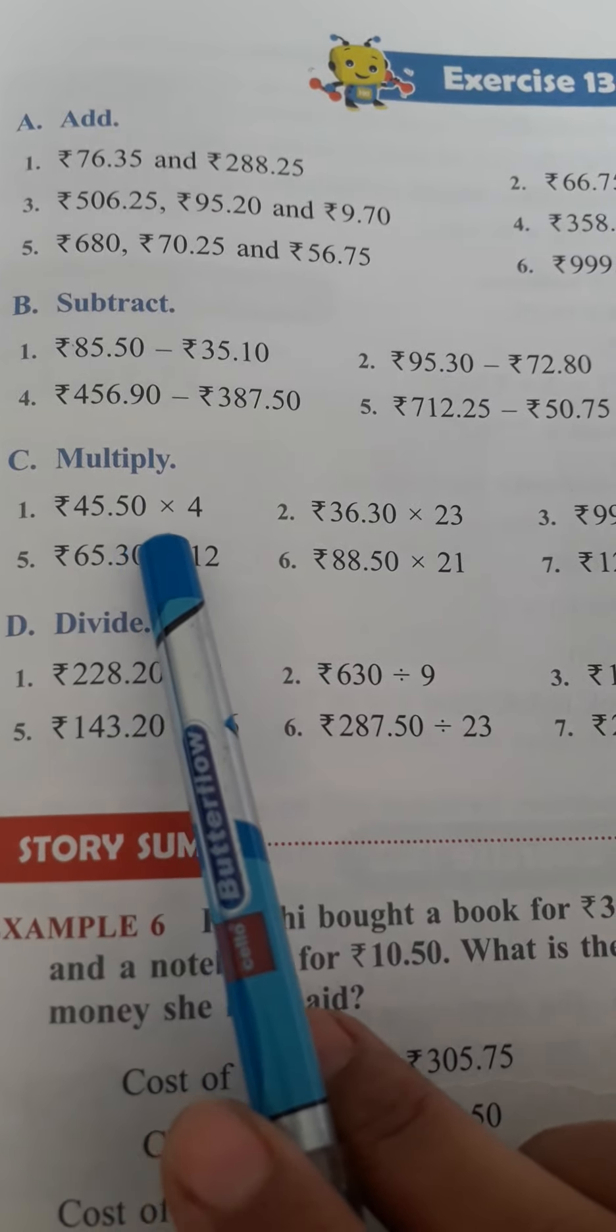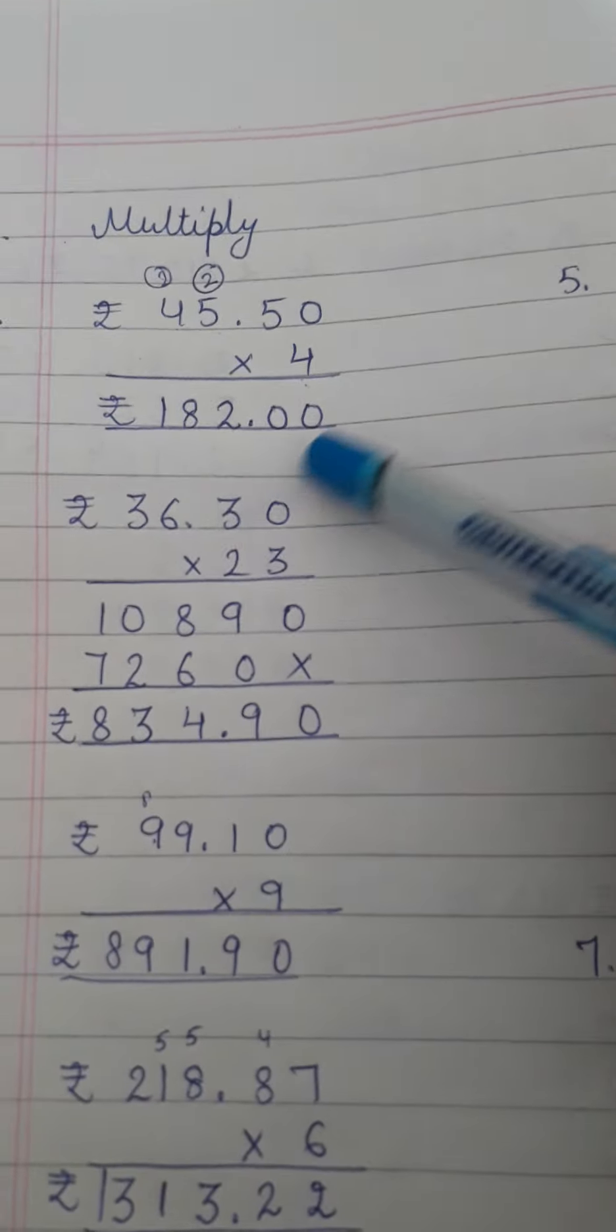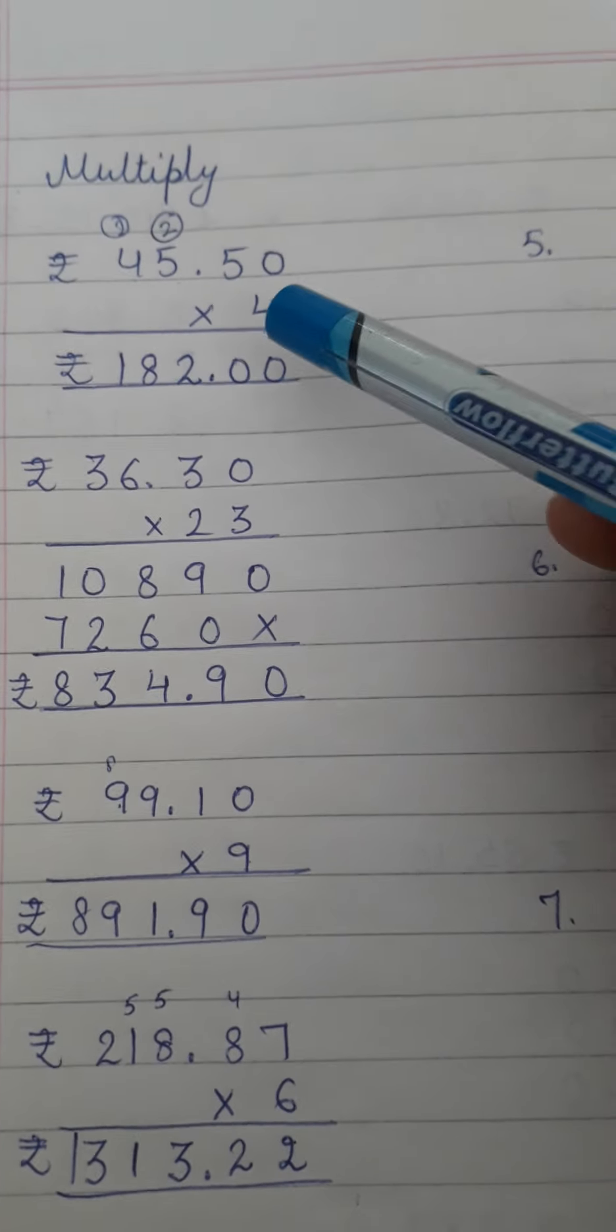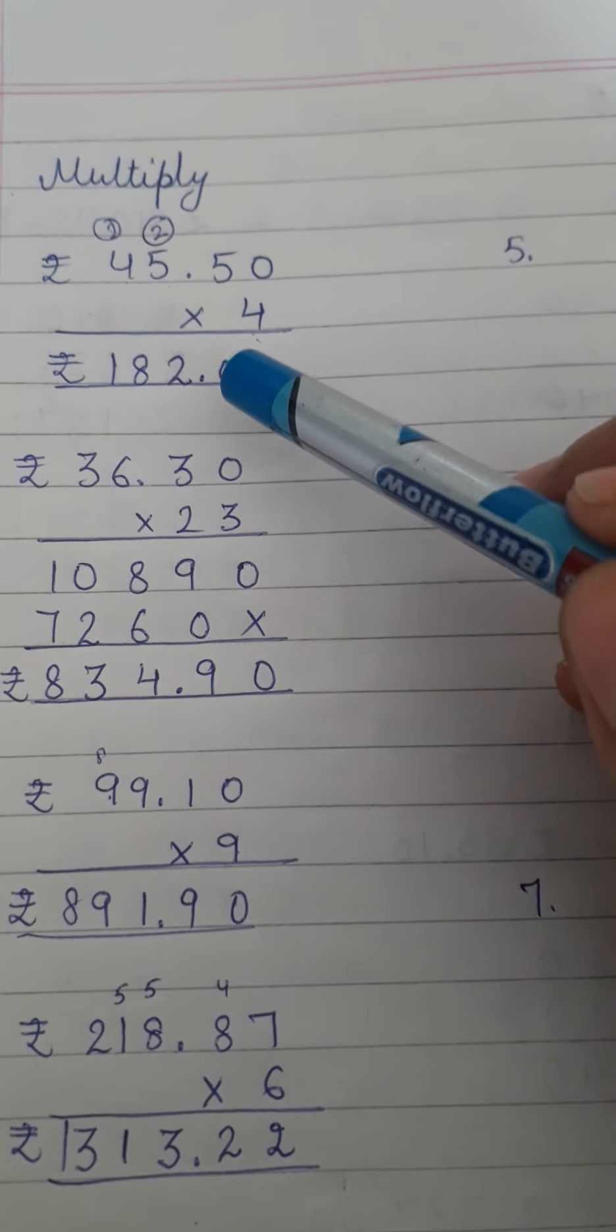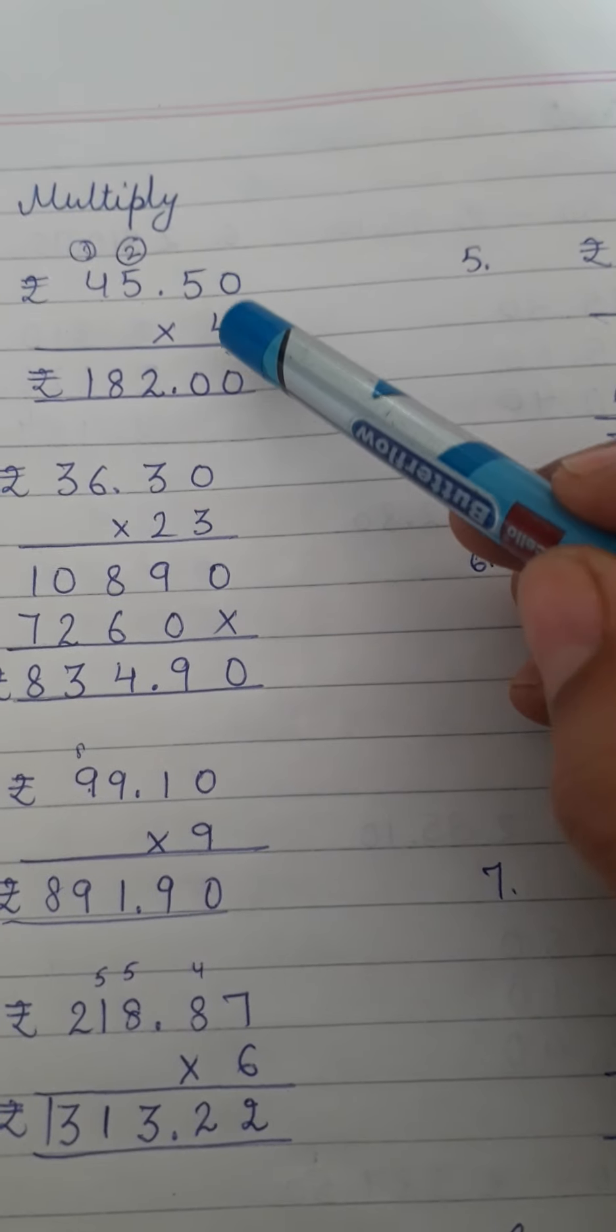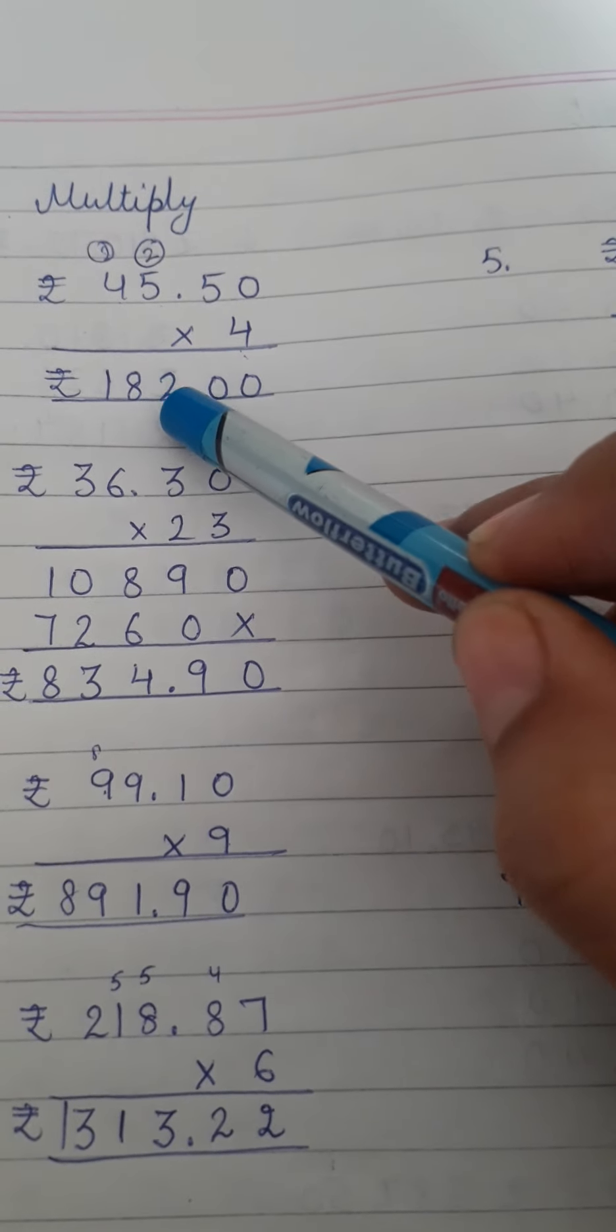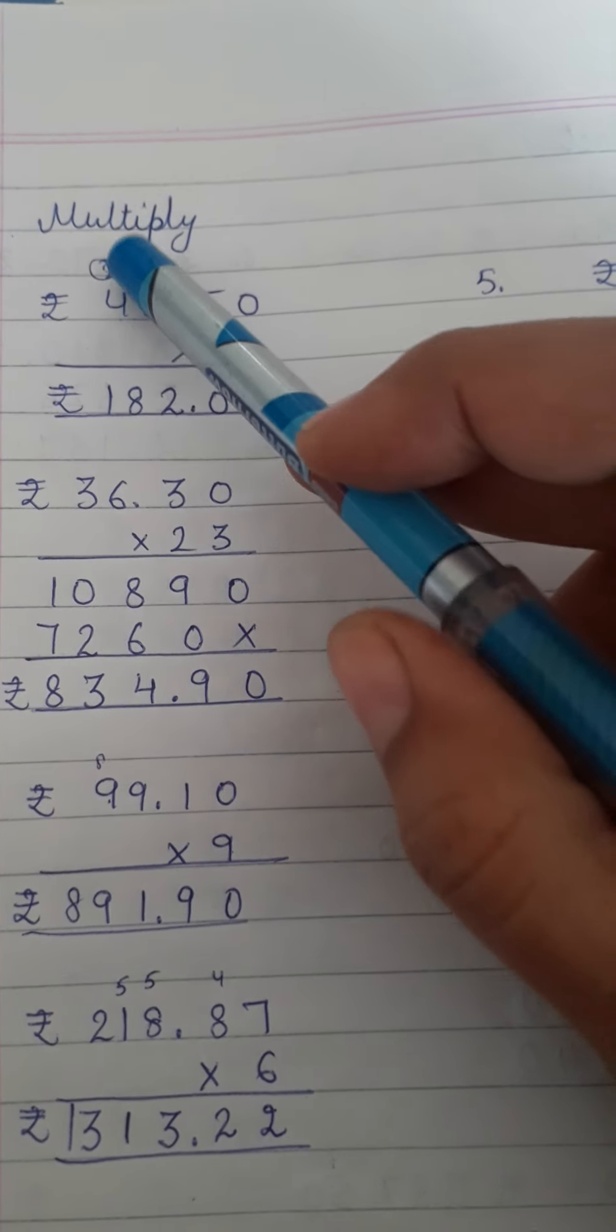Rupees 45.50 multiply by 4. So here is first question. Multiplication is normal, just as you multiply in questions. You just need to know your tables. 4 zeros are 0, 4 fives are 20, 0 here and carry over 2. 4 fives are 20 plus 2, 22, 2 and carry over 2. 4 fives are 16 plus 2, 18.